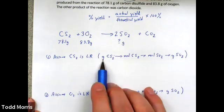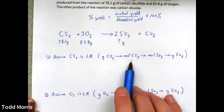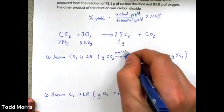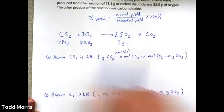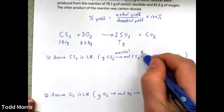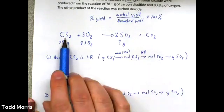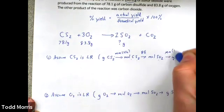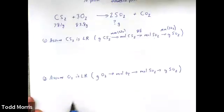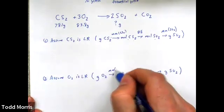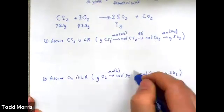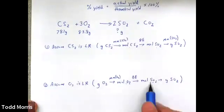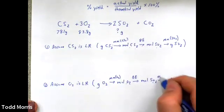Going from grams of one substance to grams of a different substance requires a few conversions. Grams of CS2 to moles of CS2 uses the molar mass of CS2. Moles of CS2 to moles of SO2 uses the balanced equation: 1 mole of CS2 produces 2 moles of SO2. Moles of SO2 to grams of SO2 uses the molar mass of SO2. For oxygen: molar mass of O2 converts grams to moles, then the balanced equation gives 3 moles of O2 producing 2 moles of SO2, and finally molar mass of SO2 converts back to grams.